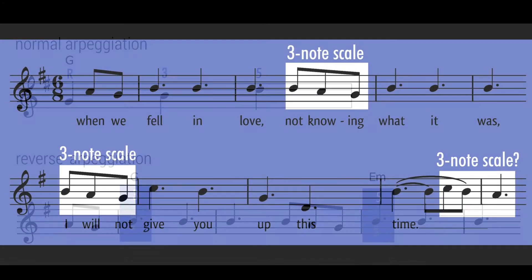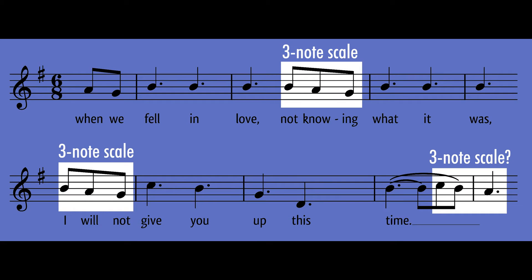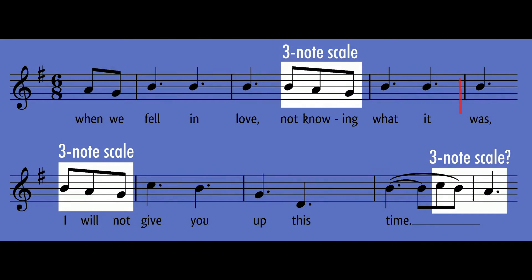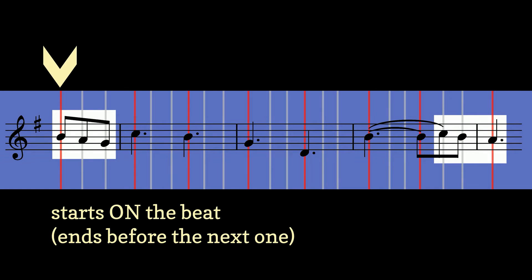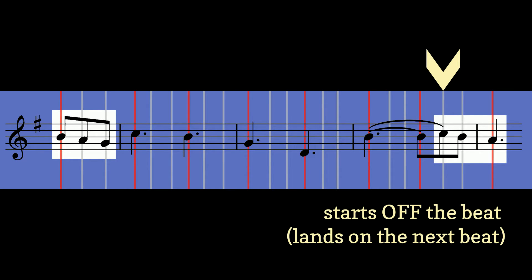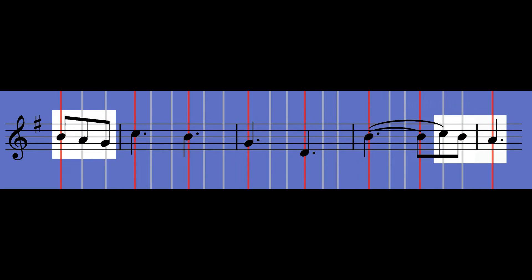Now for the eighth notes. Once again, our old friend the three-note scale. This time there are only two — or wait, maybe three? That group of notes at the end of this excerpt has the same shape as a three-note scale figure, but let me tell you why it isn't. Remember that figures line up with beats — primarily, that means the first note of a figure falls on a beat. The three notes at the end start off the beat and land on the next beat, so when we look more closely, we find that this is a neighbor figure, not a scale figure.